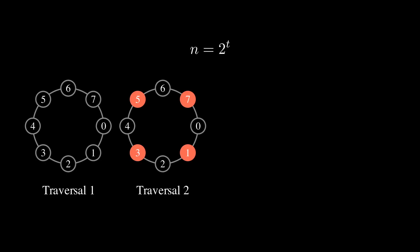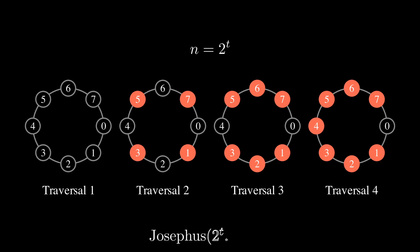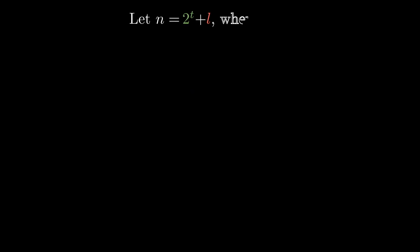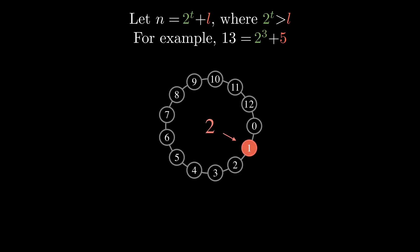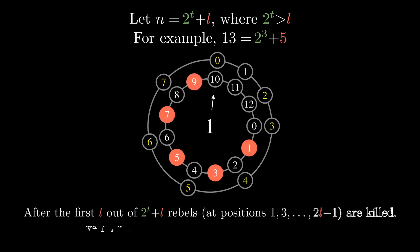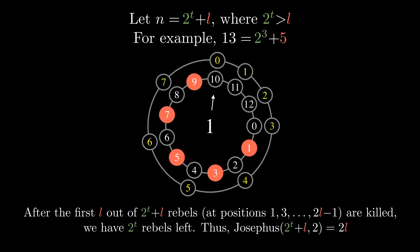Let's first consider a particularly simple case. Assume that n is a power of 2. It is not difficult to see that in this case, rebel number 0 survives. A special case allows us to design an amazingly fast algorithm for the binary Josephus problem. To do this, represent n as 2^t + l, where t is the largest power, such that 2^t does not exceed n. After killing the first l rebels, we will have a smaller circle with 2^t rebels. And we know that the initial rebels in this smaller circle will survive. Since the positions of the first l killed rebels are 1, 3, 5, up to 2l-1, we conclude that Josephus(2^t + l) is equal to 2l.